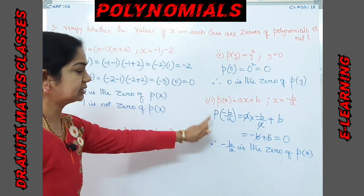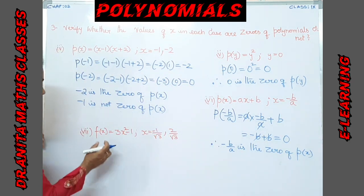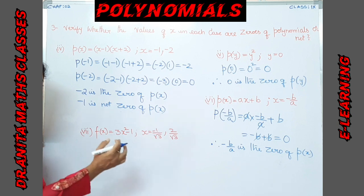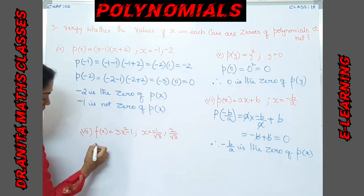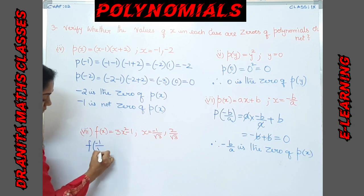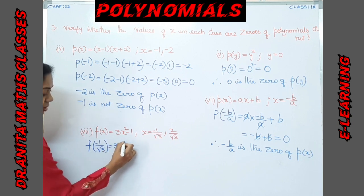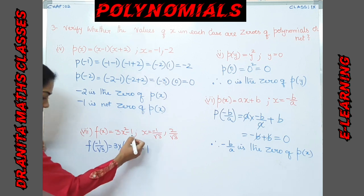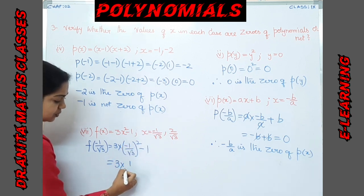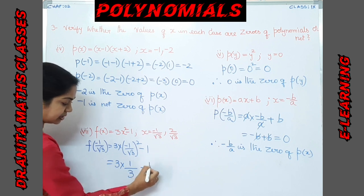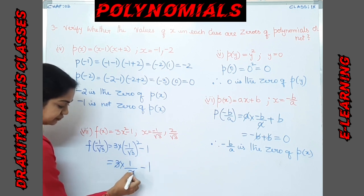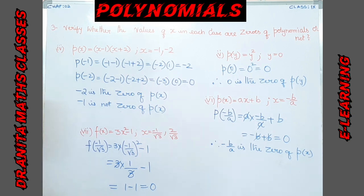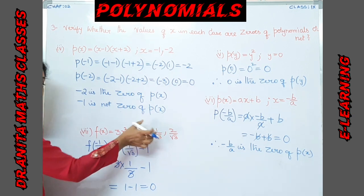For the seventh part, f(x) = 3x² - 1, checking x = -1/√3 and x = 2/√3. Substituting x = -1/√3: 3 × (-1/√3)² - 1 = 3 × (1/3) - 1 = 1 - 1 = 0. We get 0, so x = -1/√3 is a zero of the polynomial.